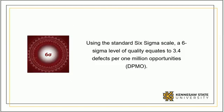Six Sigma levels provide measures of quality by comparing the amount of variation in a process to what is allowed in order to meet the organization's quality goals. Six Sigma is therefore a measure of how often a process fails to meet its requirements. Using the standard Six Sigma scale, a Six Sigma level of quality equates to 3.4 defects per 1 million opportunities, or DPMO.